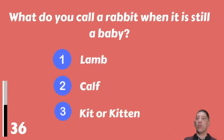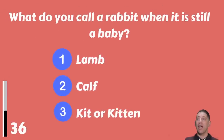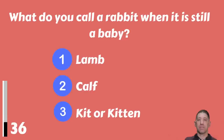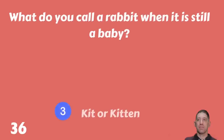What do you call a rabbit when it is still a baby — a lamb, a calf, or a kit or kitten? The answer is a kit or kitten.